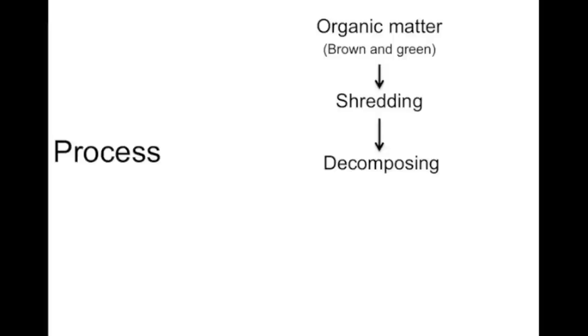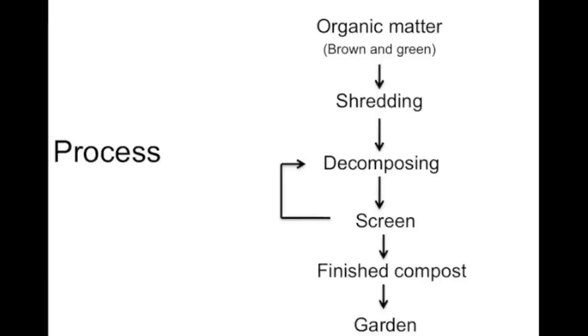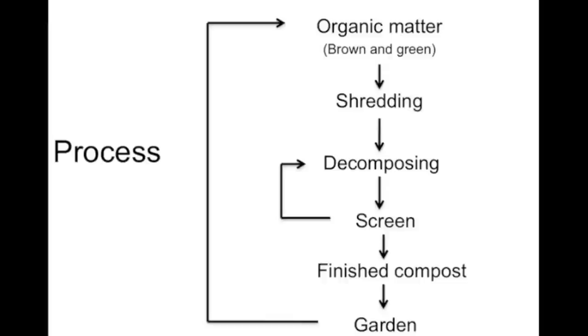Let's go back to the process and have a summary. You have the organic matter — the browns and the greens — that you mix, shred, and decompose through the composting process. You screen the material; the large part goes back into the composting process, and the finished compost goes into your garden. Whatever you grow in your garden, the organic matter goes back into composting. In your garden things are happening: you are sinking material there, you are building organic matter and humic acids that provide sustainability. It's a cyclic process where you sink your carbon, which provides sustainability.